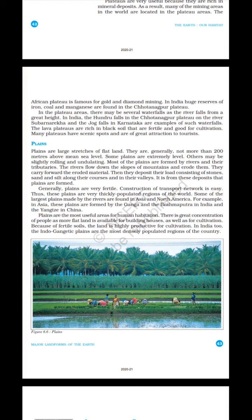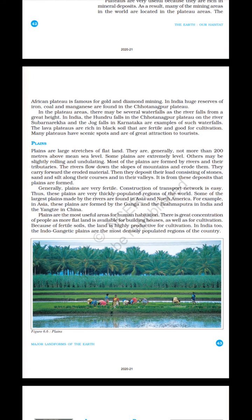In plateau areas there may be several waterfalls as the river falls from a great height. In India, the Hundru falls in the Chota Nagpur plateau on the river Subarnarekha, and the Jog falls in Karnataka, are examples of such waterfalls. The lava plateaus are rich in black soil that is fertile and good for cultivation. Many plateaus have scenic spots and are of great attraction to tourists.